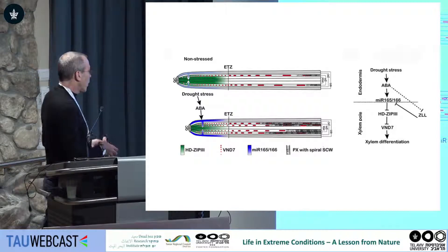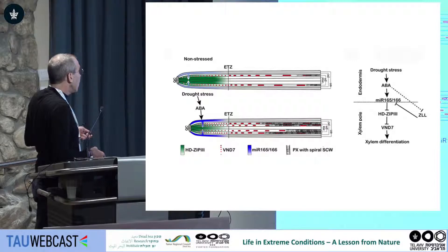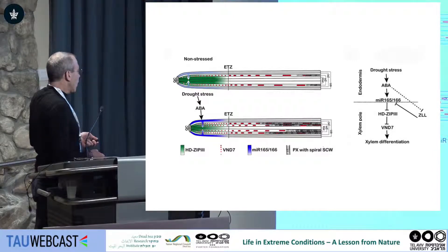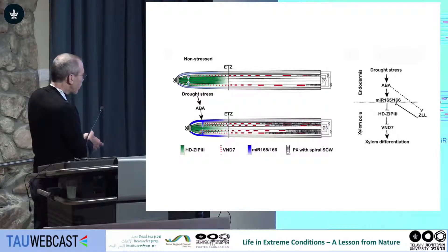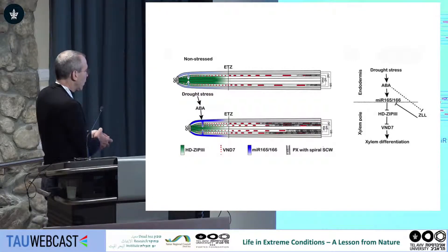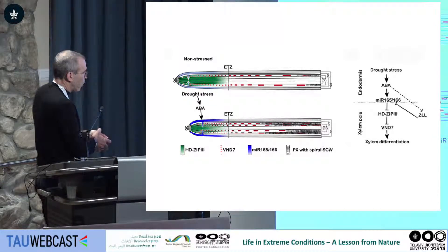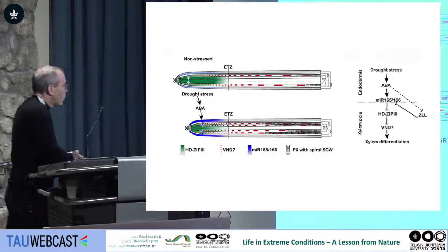This scheme describes what we found: under water stress, ABA is increased, and ABA signaling at the tip of the root induces this microRNA, which reduces the level of fabulosa. Due to that, there is earlier and more differentiation of vascular tissues in the root.